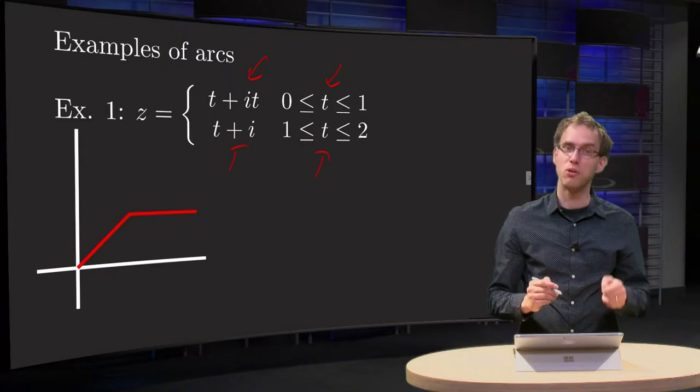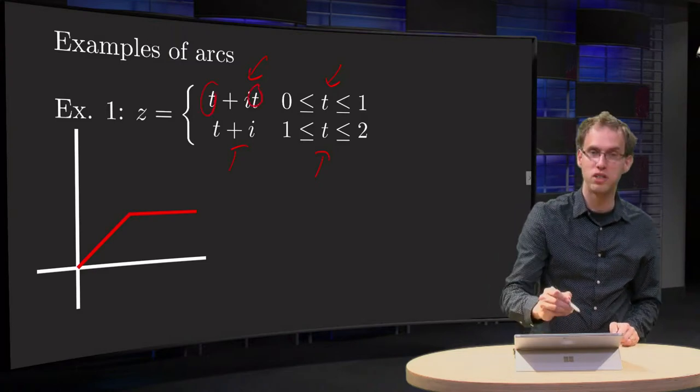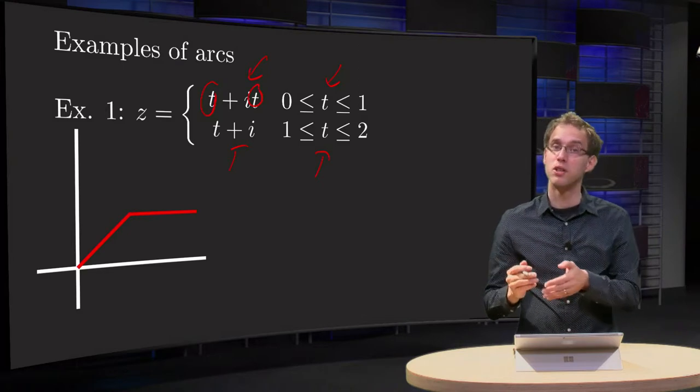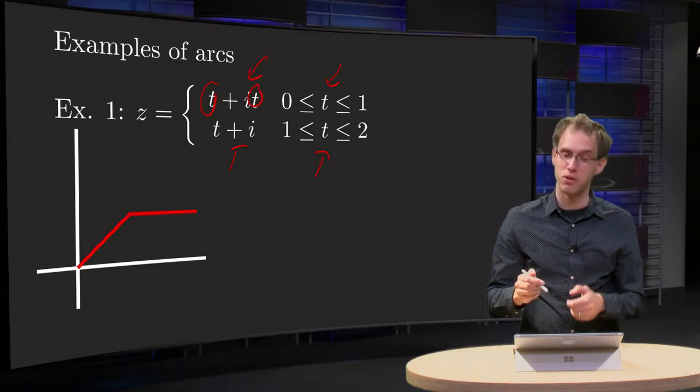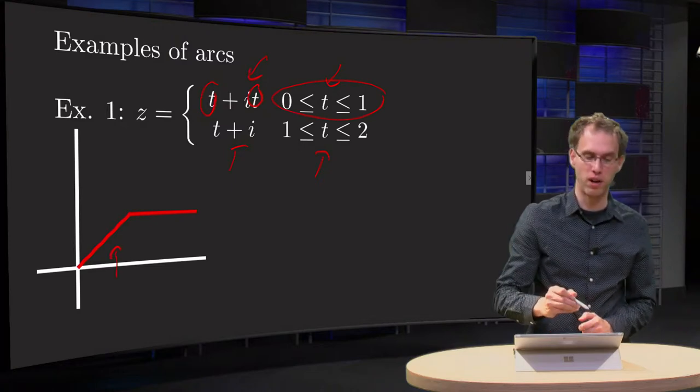So what does it look like? Well, the first part we have x equals t and y equals t, so x equals y, so we are on the line y equals x for t between 0 and 1, so x between 0 and 1. Here we have our first part.